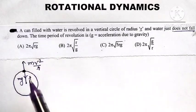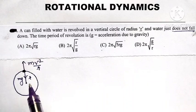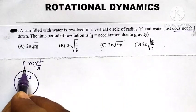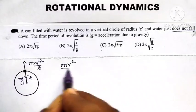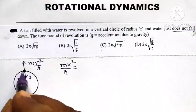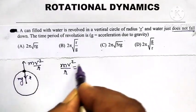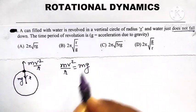What is the time period of revolution that we have to calculate? Now, when the can is at the highest position, then centrifugal force mv squared divided by r must be balanced by weight mg of the can which is acting vertically downward.